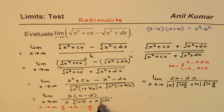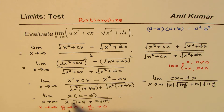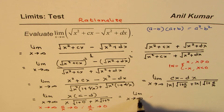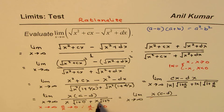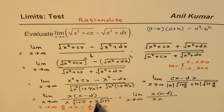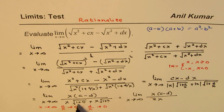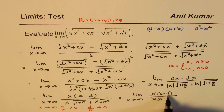We can rewrite this as the limit as x approaches infinity of x times (c minus d) in the numerator, divided by x times square root of (1 plus 0) plus x times square root of (1 plus 0) in the denominator. Since square root of 1 is 1, the denominator becomes x plus x, which is 2x. The x values cancel, leaving the constant c minus d divided by 2.